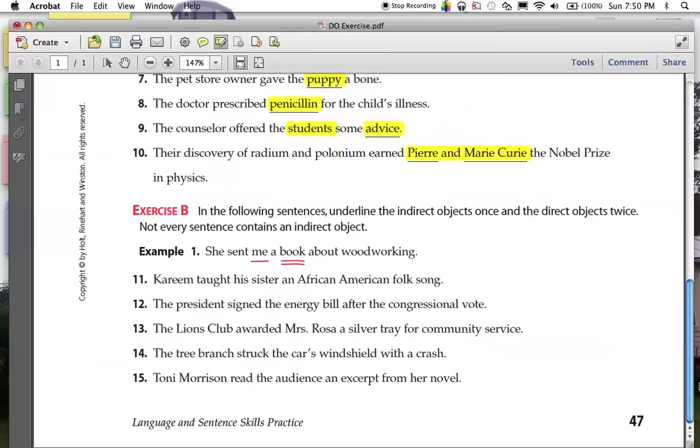Alright. Go ahead and do these five. Pause it. Alright. Here are the answers. Number 11. Now we've got to find it all. Alright. What did Corrine teach? Well, he taught a song. Direct object. Who did he teach that song to? His sister. Indirect object. I'm on fire.